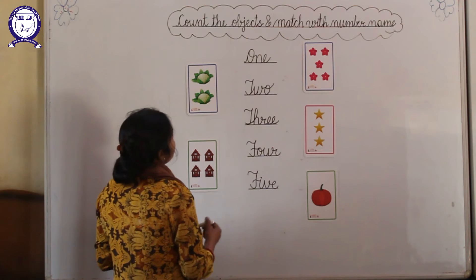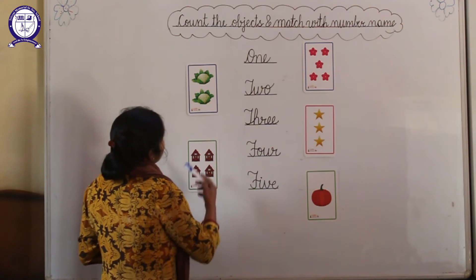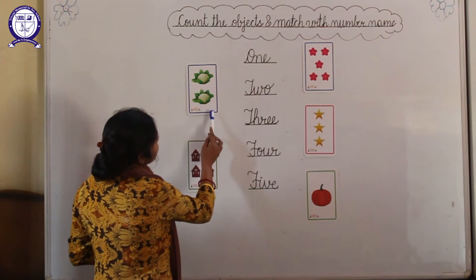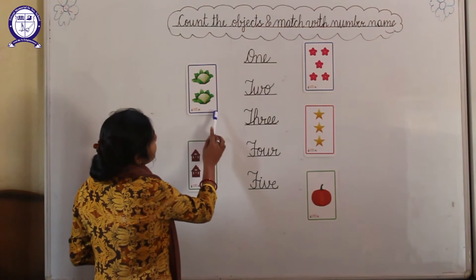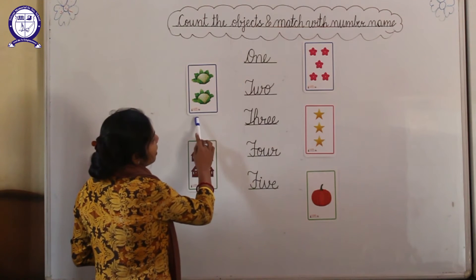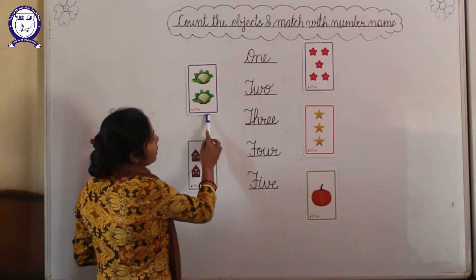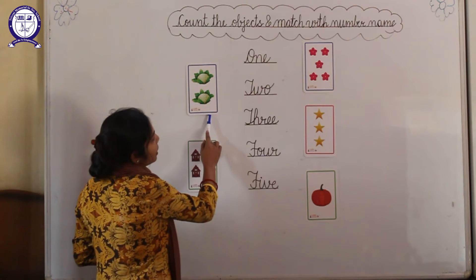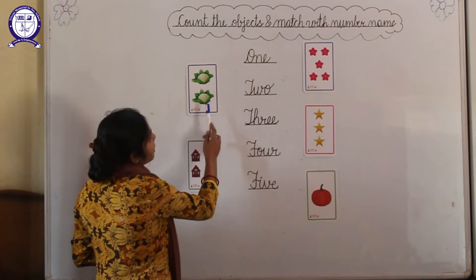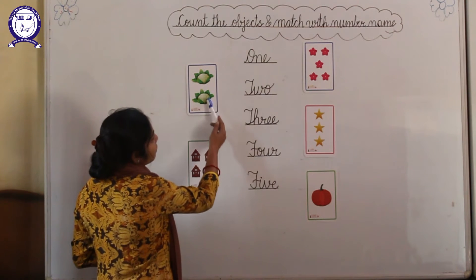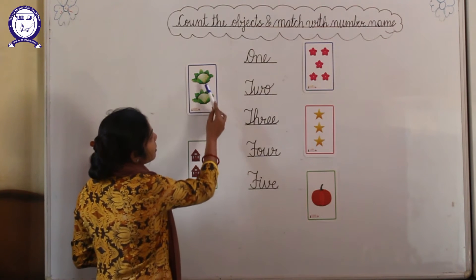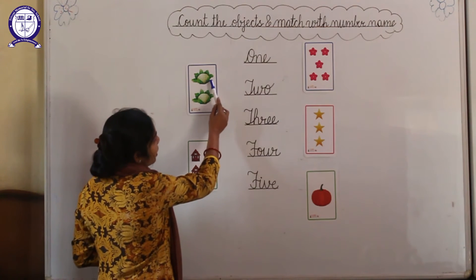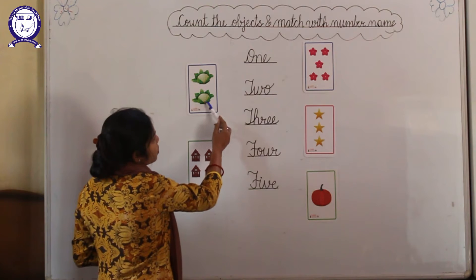Look at the board everyone. Which picture is this? These are cauliflowers. And how many cauliflowers are there? 1, 2.